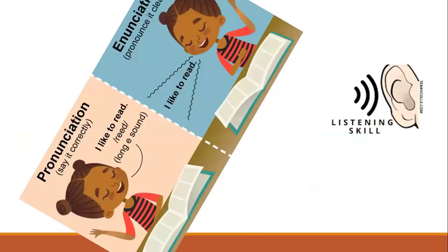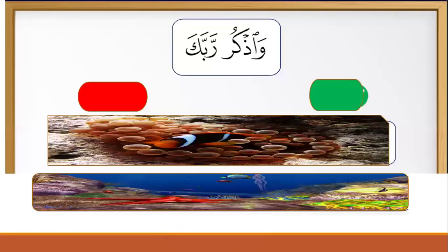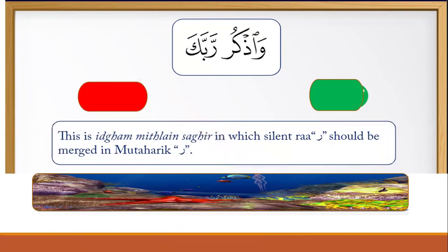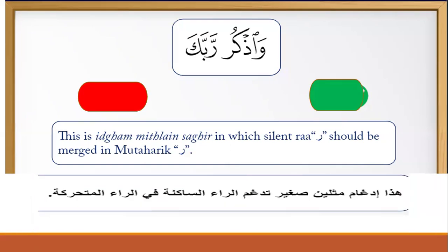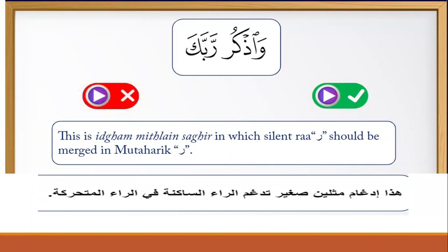Now let's develop your listening skills. Please look at this example. This is idgham mithlain saghir, in which the silent ra of وذكر should be merged into the mutaharrik ra of ربك. Please repeat after me the correct pronunciation: وذكر ربك.